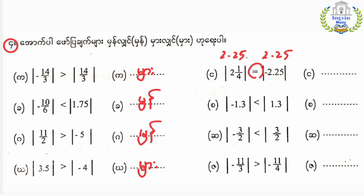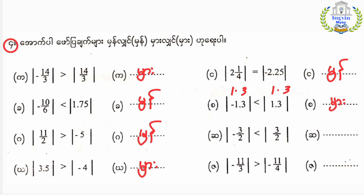Number 3: the modulus of minus 1.3 is equal to 1.3. Number 5: the modulus of minus 3.2 is equal to 3.2. Number 3: modulus of minus 11.3, and then modulus of minus 11.4.